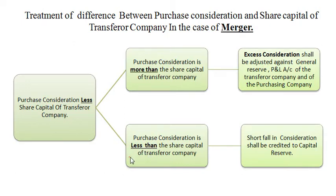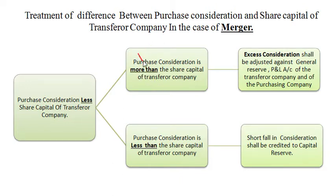In the second situation, purchase consideration is less than the paid up share capital of the transferror company, and this will be treated as capital profit for the transferee company. The reason: in situation one, the transferee company is giving more amount as purchase consideration against paid up share capital, so that excess amount is treated as capital loss. In situation two, the transferee company is giving less amount as purchase consideration against paid up share capital, so it is treated as capital profit.